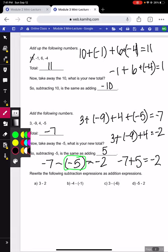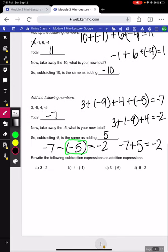So our last thing for this mini lecture would be to just rewrite these subtraction expressions as addition problems. For example, 3 minus 2: 3, change to addition, the opposite of 2 would be negative 2. For this one, keep the first number, change to addition, the opposite of negative 1 is positive 1.